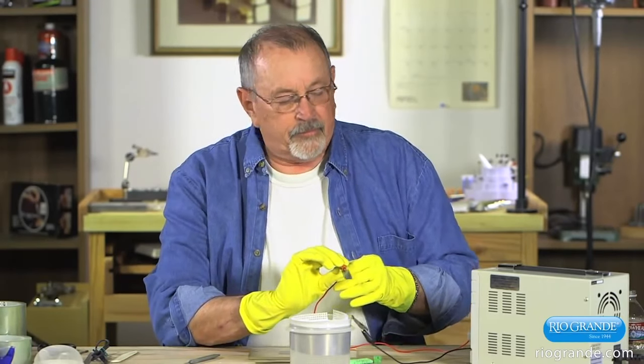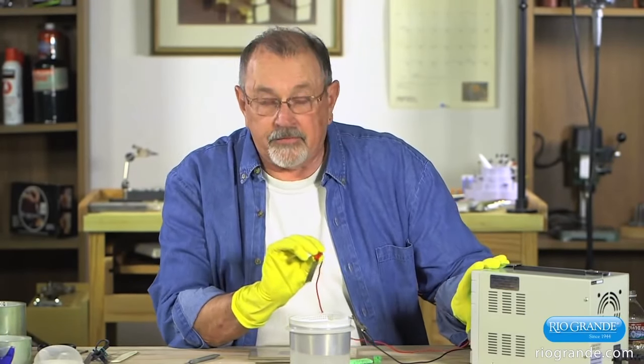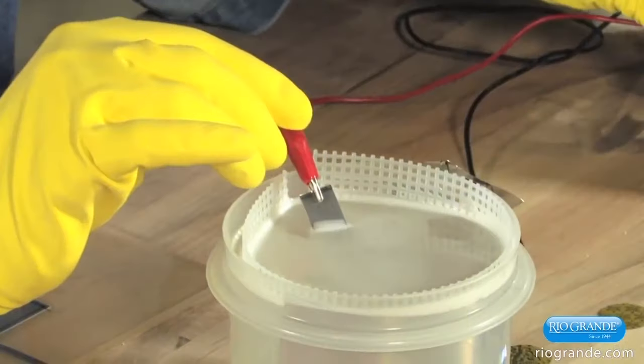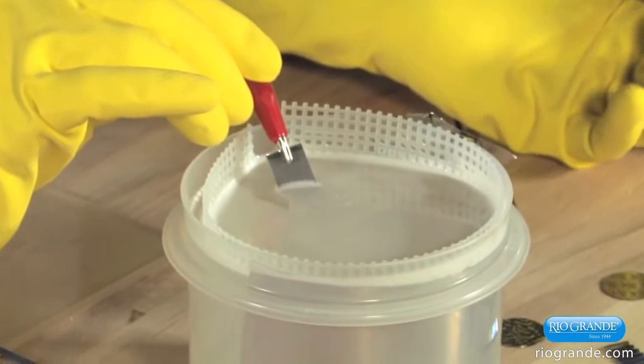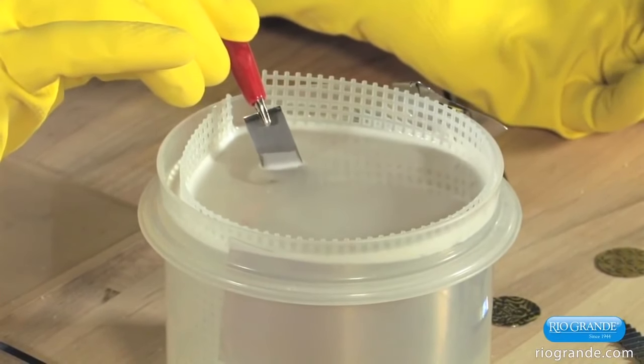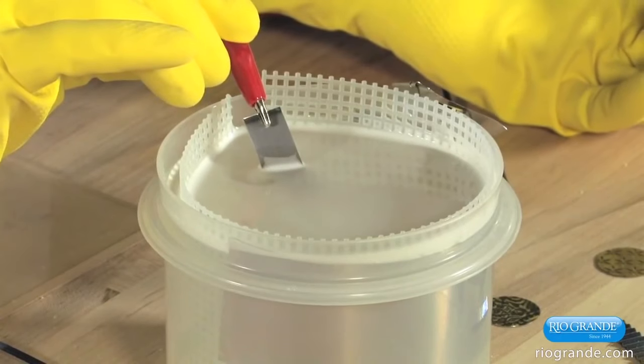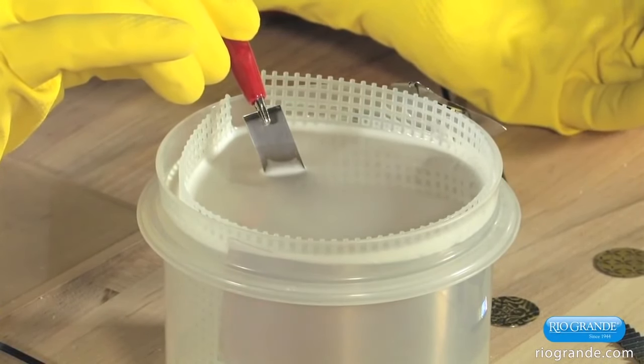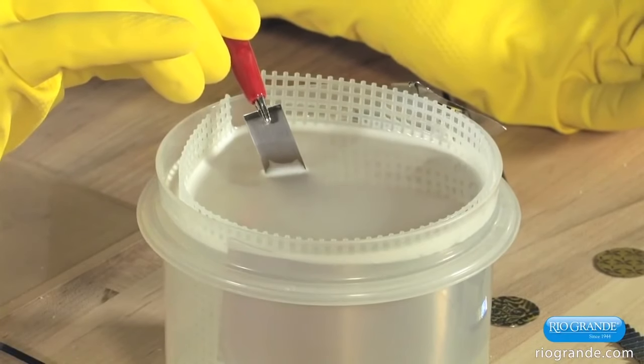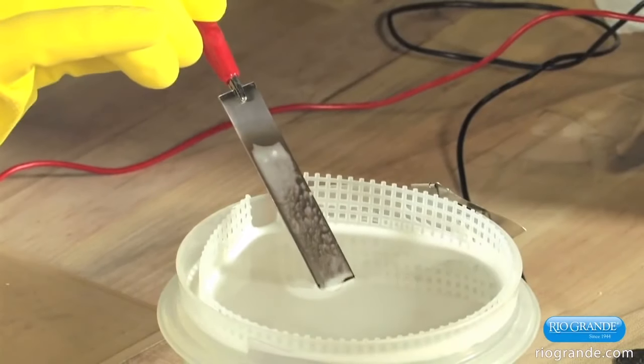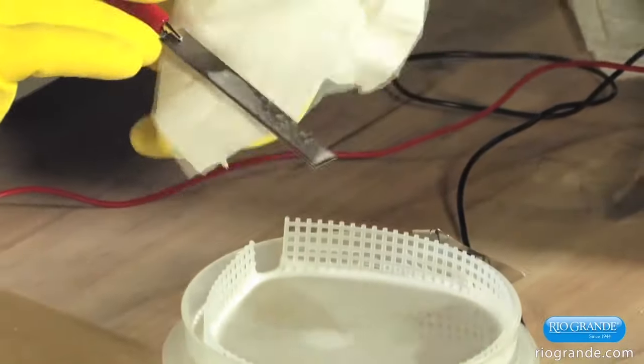So we'll start out by taking our piece of niobium, submerging it in the soapy water bath. I'll then turn the voltage up to about 15 volts. There we have it. And just like that, we have our first set of colors.